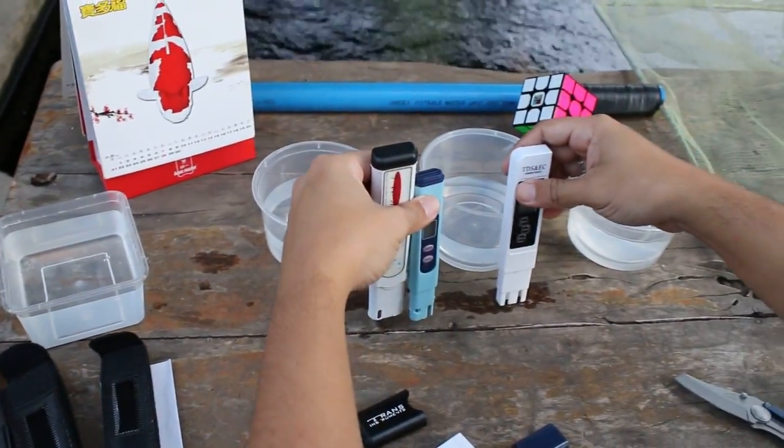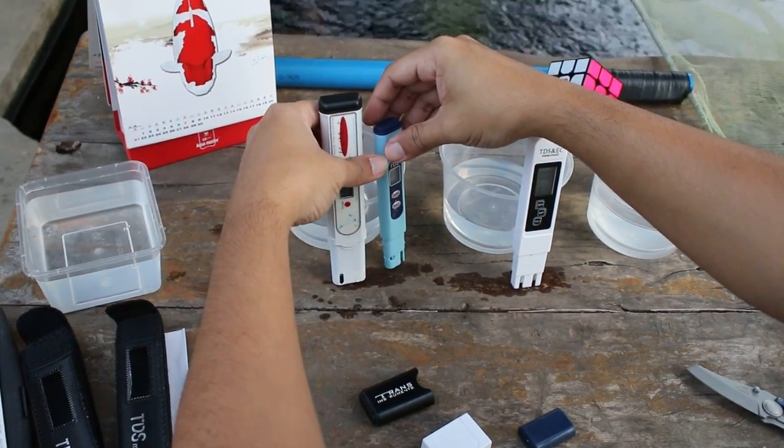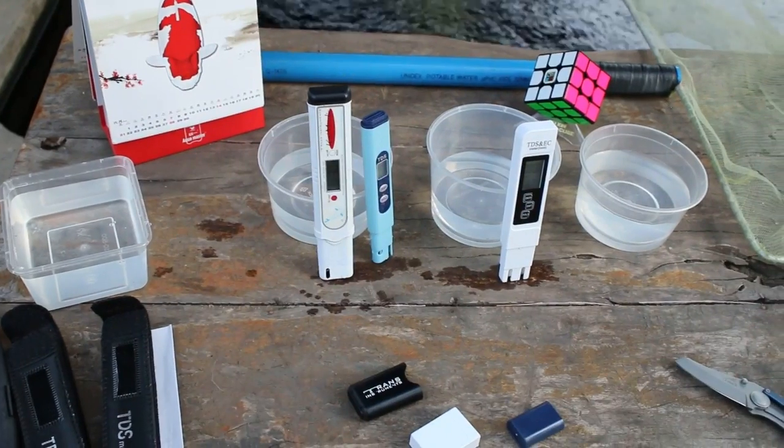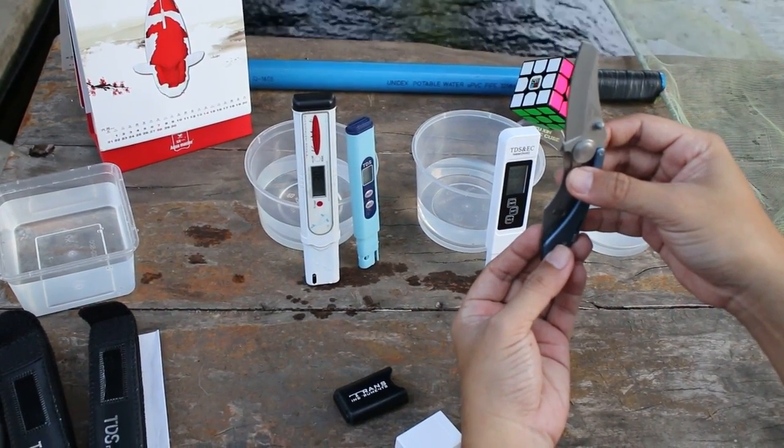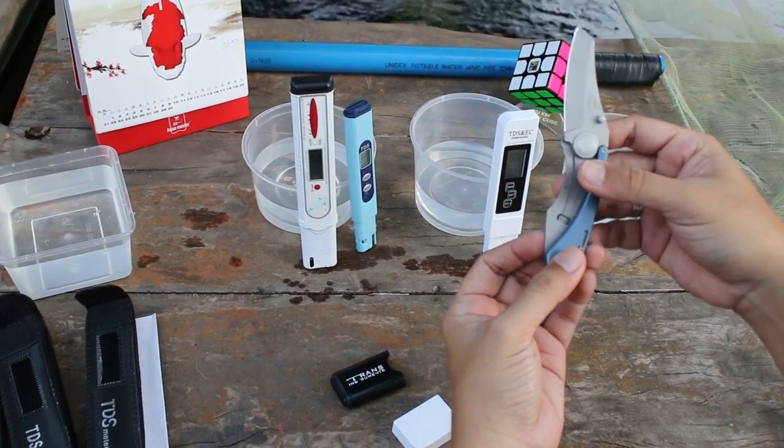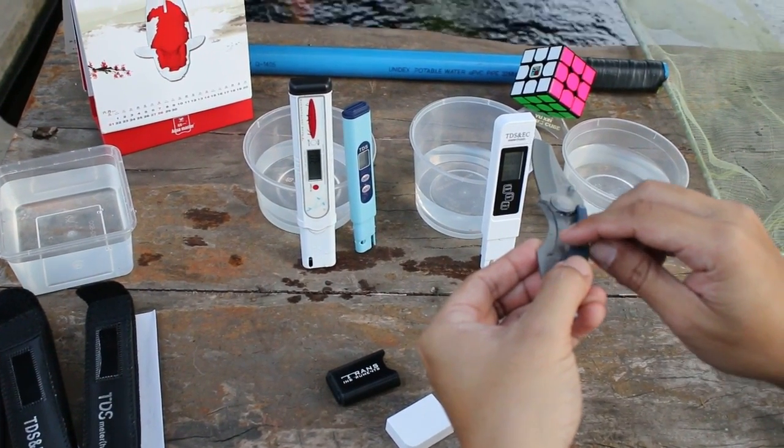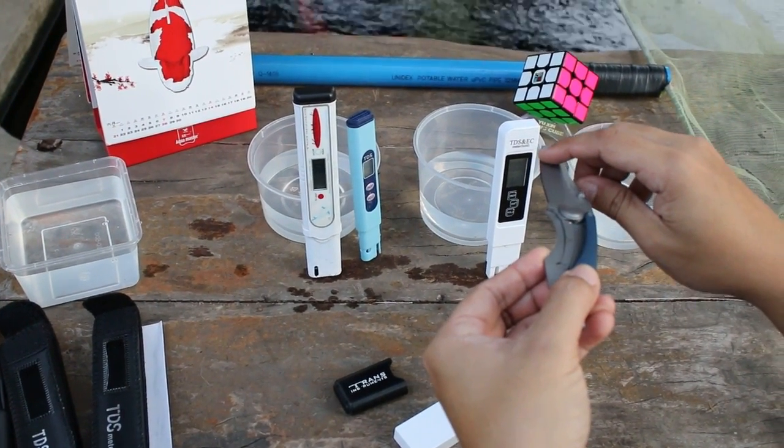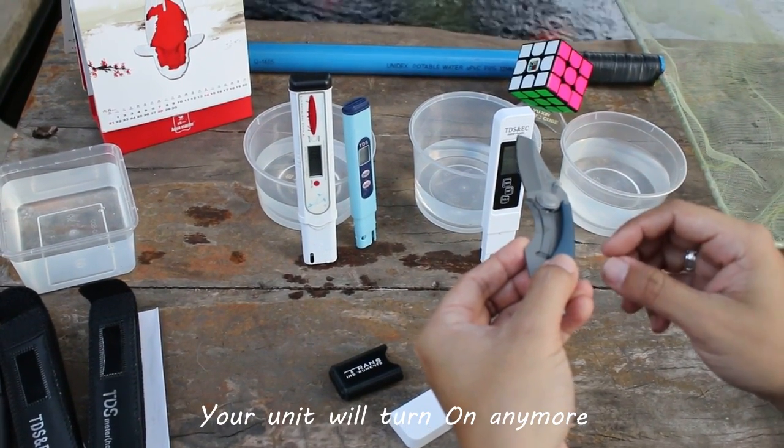You notice me keeping these devices in an upright or standing position. The reason behind that is, let's say this is a device, then there's water here. Sometimes if you put it on a horizontal position, the water that's in here in the probe, it's going to crawl inside the unit and into the batteries and it's going to corrode the circuit and your unit will not turn on.